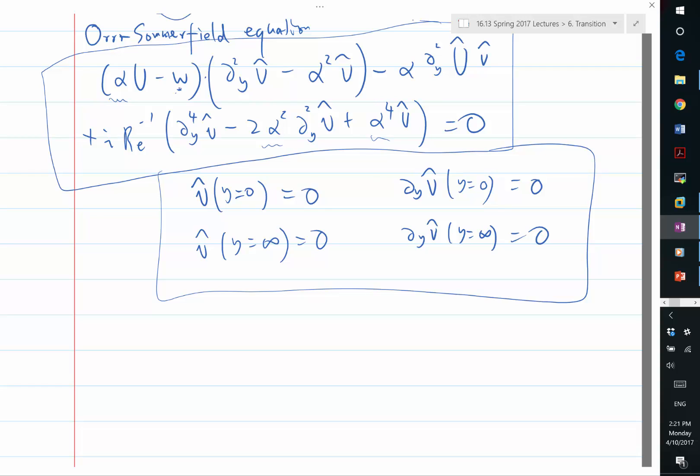If you fix alpha, that means you have a certain spatial wave, and you look at how if you prescribe this spatial wave as an initial condition, how is this wave going to evolve? Is it going to grow? Is it going to decay? That's what happens if you fix alpha.